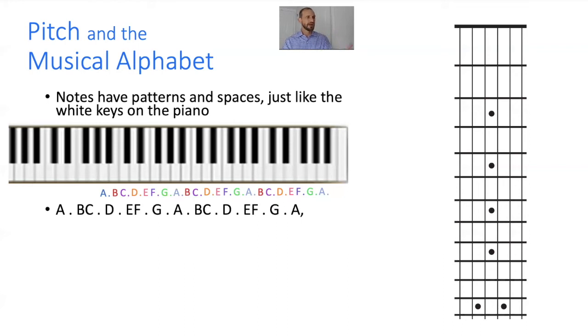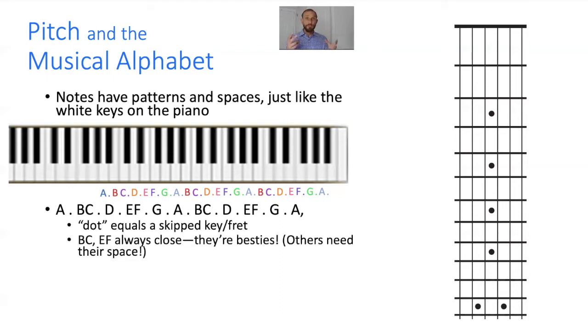Then we have D as the next white key. E, F is right next door. Then you have G as the next white key, and then it's back to A. This cycle continues over and over. You have A, a dot equals a space, B, C—they're always together, they're besties. Then you have a space D, a space E, F, and then a space to G. Basically, all keys need a space between them with the exception of B, C and E, F. It's like they're besties. Everybody else needs their space.